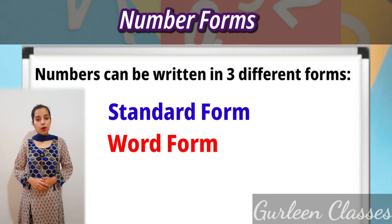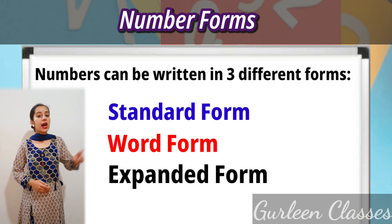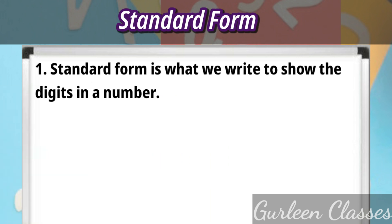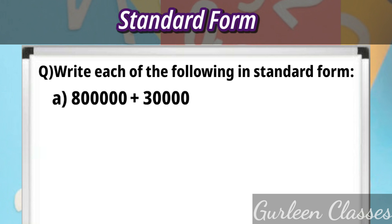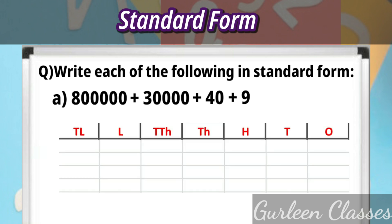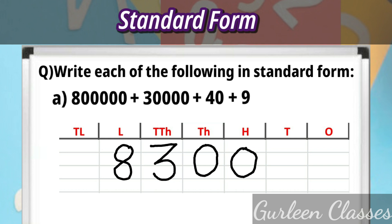Numbers can be written in 3 different forms: standard form, word form, and expanded form. Standard form is what we write to show the digits in a number. For example, write in standard form: 8 lakh plus 30,000 plus 40 plus 9. No value is given for the thousands and hundreds place, so we write zeros in those two places. The answer is 830,049.